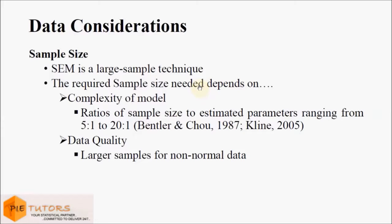By complexity of the model we mean the more parameters we are required to estimate, the greater will be the sample size. Some of the recommendations suggest that the ratio of the sample size to the number of parameters to be estimated should be ideally between 5:1 to 20:1.